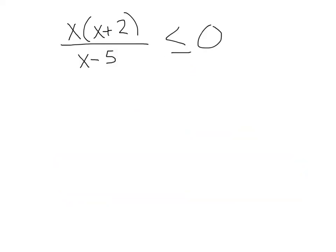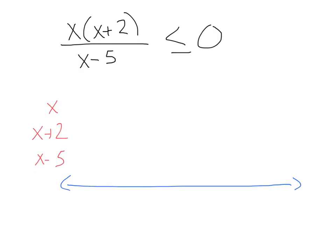Let's do one more quickly. Here we have x times x plus 2 divided by x minus 5 is less than or equal to zero. To start, I'm going to separate each of my factors into a chart: I have x, x plus 2, and x minus 5. I'll draw my number line down here and mark my zeros. x has a zero at zero. For x plus 2, we have a zero at negative 2. And for x minus 5, my zero is going to be at positive 5.